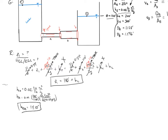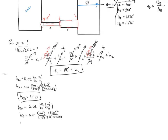That's a lot of elevation lost in just a 200-foot pipe. Now for pipe B: hfB = 0.02 × (LB / dB) × (vB² / 2g) = 0.02 × (300 / 1.596) × (8² / (2 × 32.2)) = 3.74 feet.